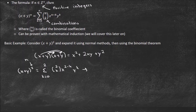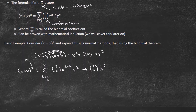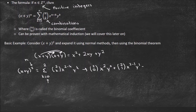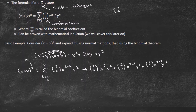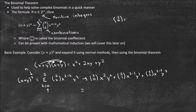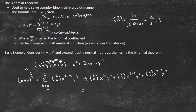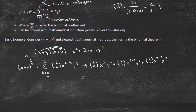Plugging in: the first term is 2-choose-0 times x to the (2 minus 0), which is x², times y to the 0. Now, 2-choose-0 by the combinations formula is 2! divided by (2! times 0!), which equals 1. And y to the zero is 1 as well, so we're just left with x².